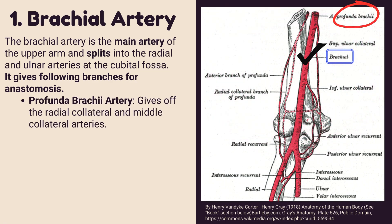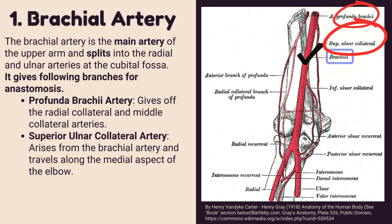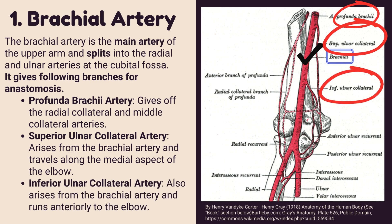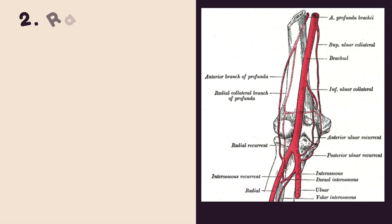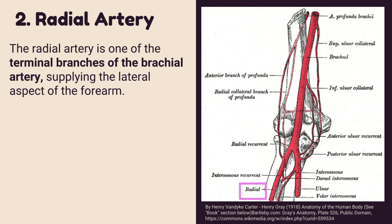The brachial artery gives the following branches for anastomosis. The profunda brachii artery gives off the radial collateral and middle collateral arteries. The superior ulnar collateral artery arises from the brachial artery and travels along the medial aspect of the elbow. The inferior ulnar collateral artery also arises from the brachial artery and runs anteriorly to the elbow.